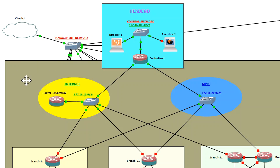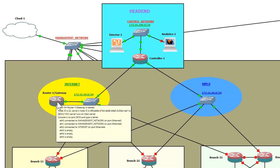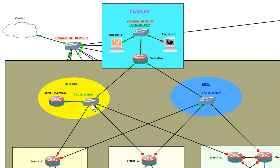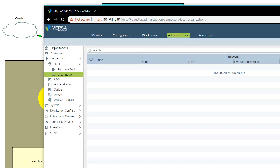So here you can see the highlighted information: Ethernet zero is connected to the management network, Ethernet one is connected to the management network as well, and Ethernet two is connected to the internet network. Now let's go to the Director and actually do the configuration.